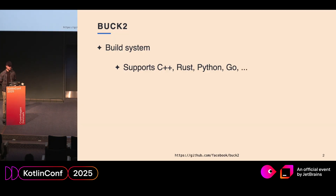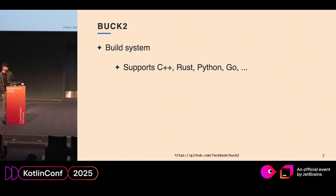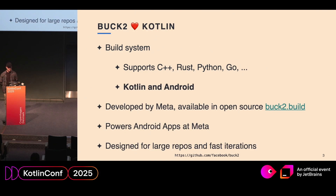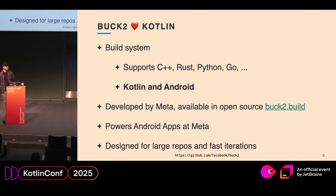We are talking about Buck2 today. What is Buck2? It's a build system, a successor of Buck — that's why we have the two in the name. Buck was created long ago and open-sourced before there was anything large-scale available on the market. It supports C++, Rust, Python, Go, and starting today it supports Kotlin and Android development in an alpha version. The build system is developed at Meta and available as open source.